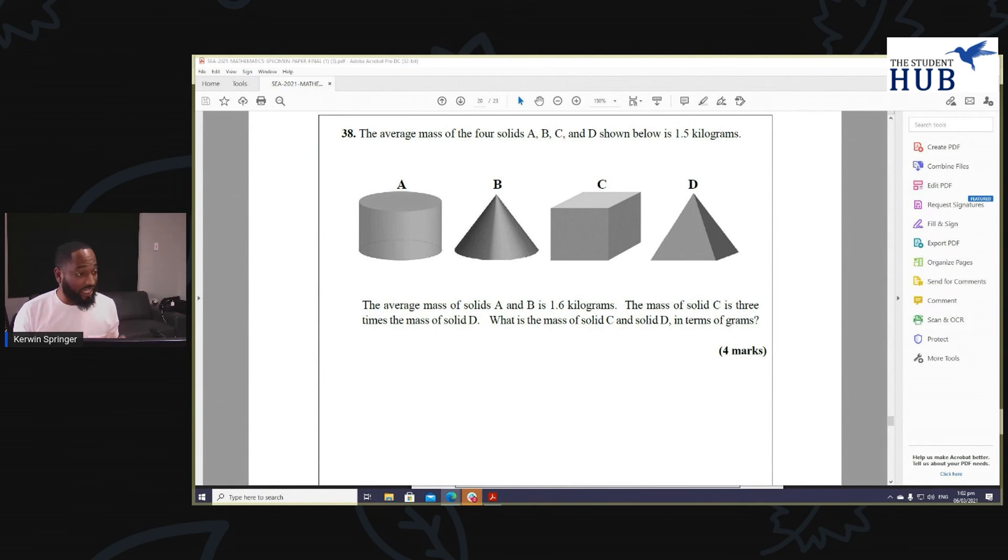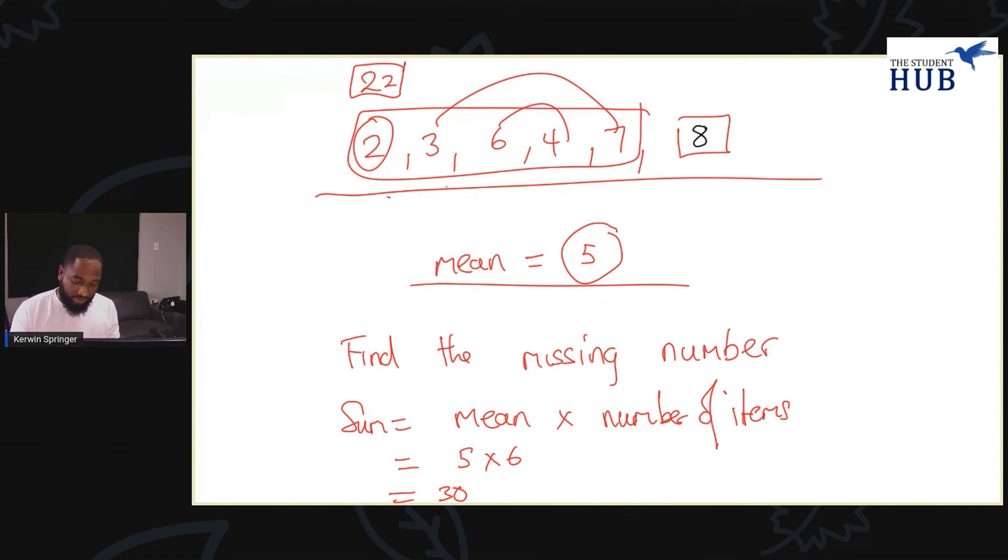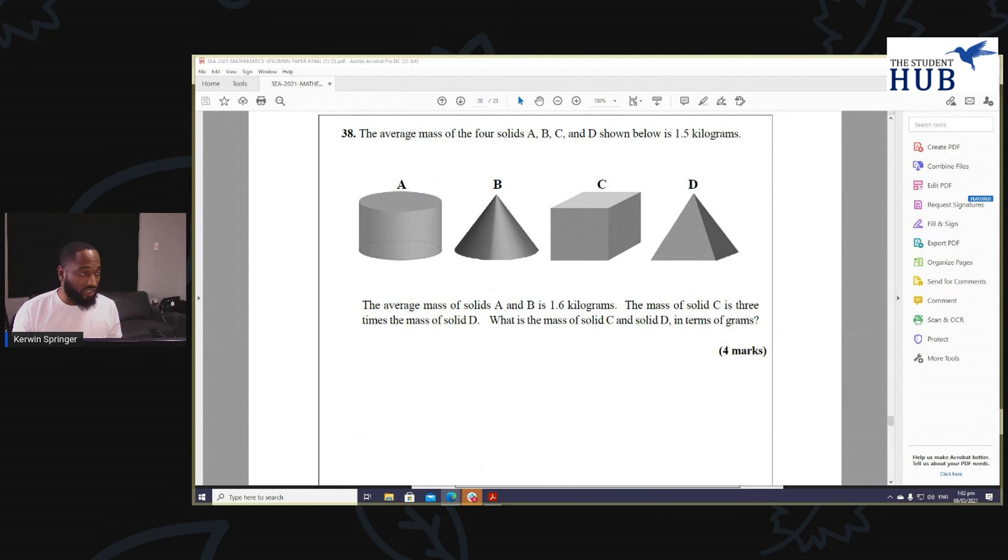So it's important for students to have a very good understanding of questions like this. This is a more complex version of a question with mean and finding the missing value, and these questions come once, sometimes twice in the same SE exam.